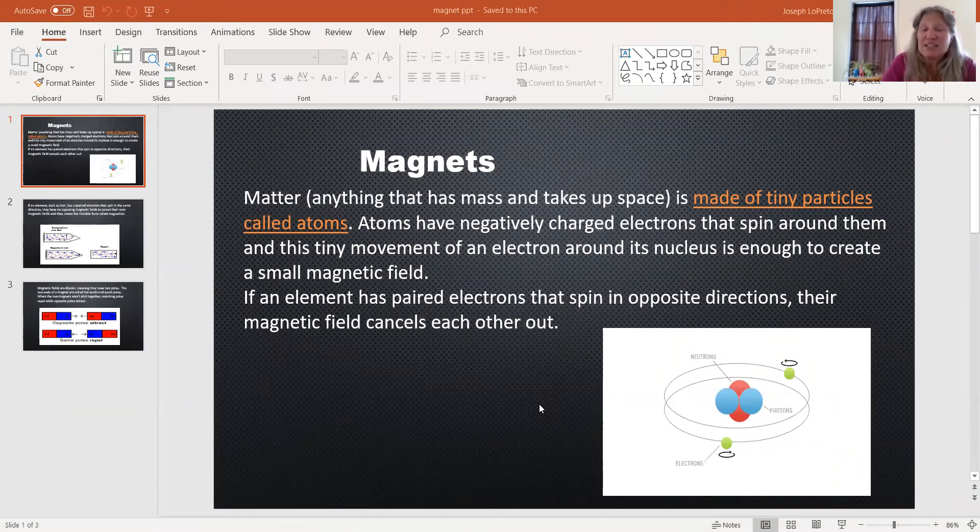Magnets is matter that's made up of tiny particles called atoms. And that's what this picture is. They have negative charge electrons that spin around them. That's what these green little dots are.